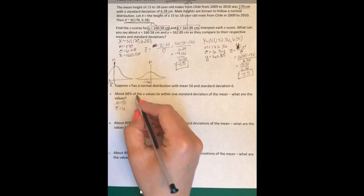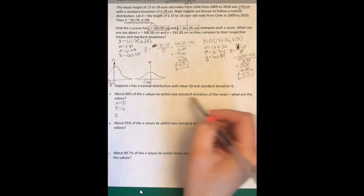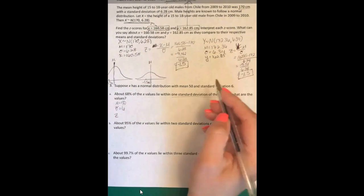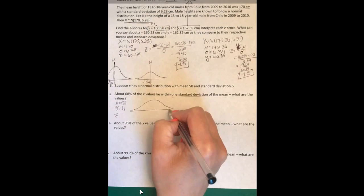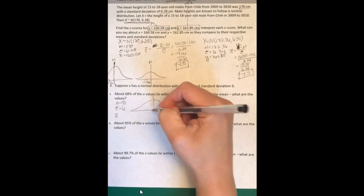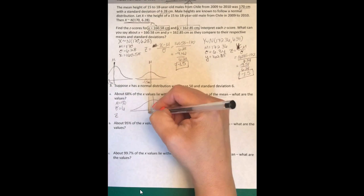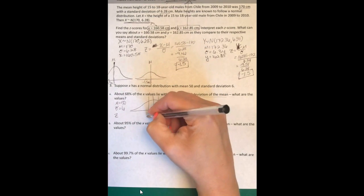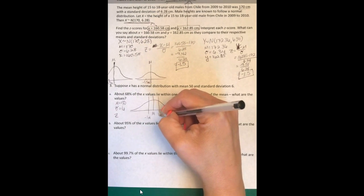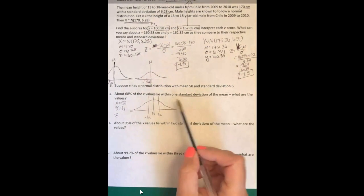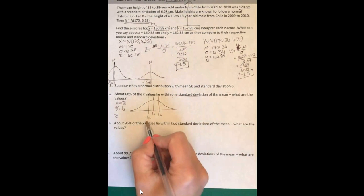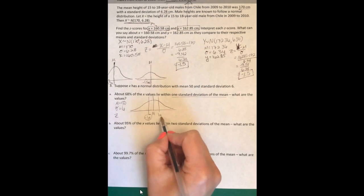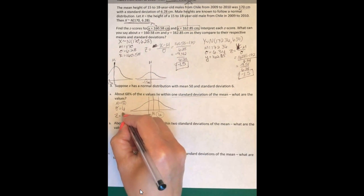If we quickly draw a normal distribution, say this is negative one and that's one, they want to know the X values that lie within one standard deviation of the mean. So we have to find this and this. We're looking for when Z is one and when Z is negative one, so we have to do two here.